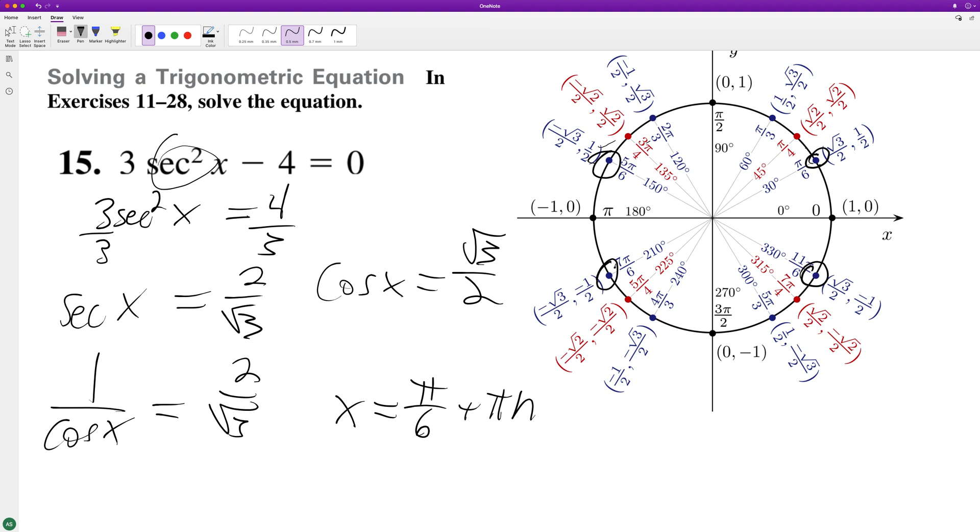And it just flips every 180 degrees. Then we're gonna have 5π over 6 plus πn. Otherwise you'd have π over 6 plus 2πn, and then like 5π over 6 plus 2πn, and then 7π over 6 plus 2πn.